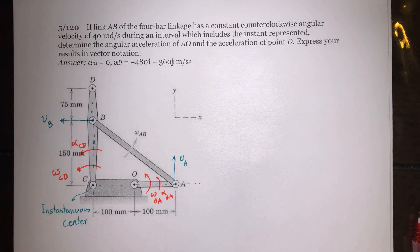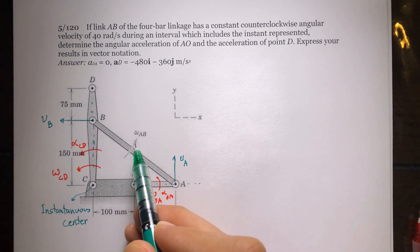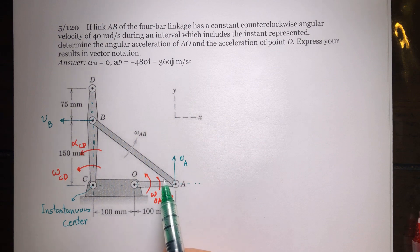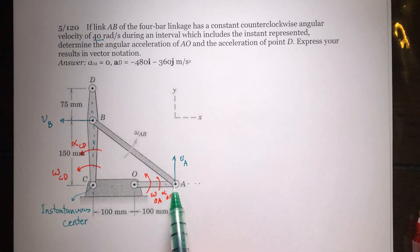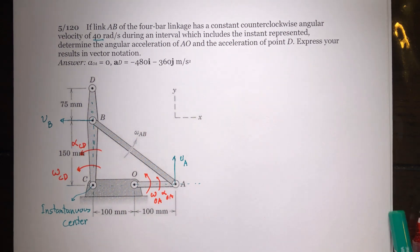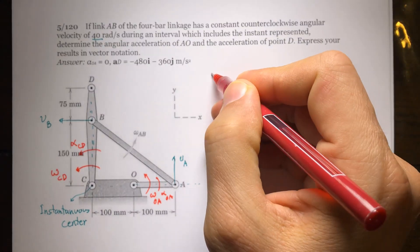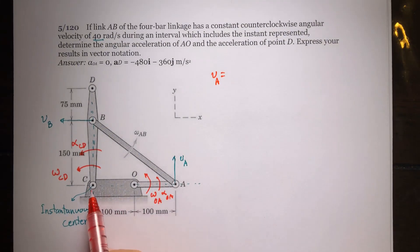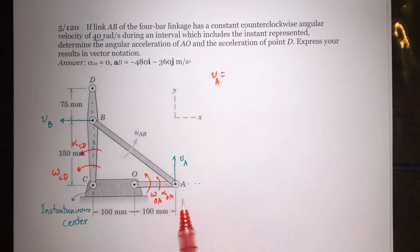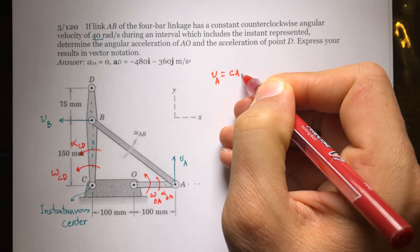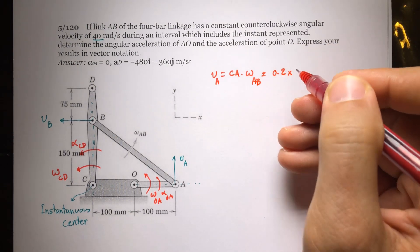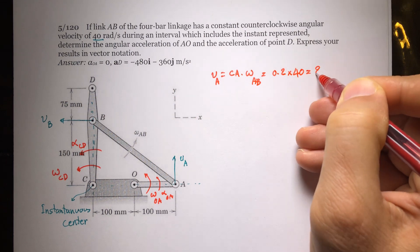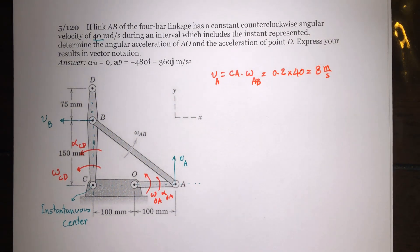Using the properties of the instantaneous center, we multiply the angular velocity by the distance from the center to any point to get that point's velocity. The velocity of A equals CA times Omega_AB, which is 0.2 meter times 40, giving us 8 meters per second.